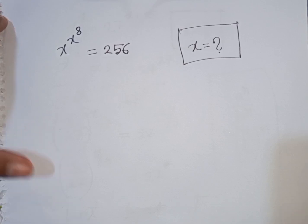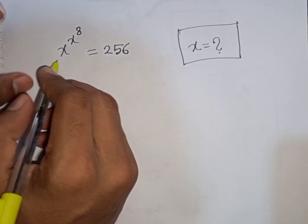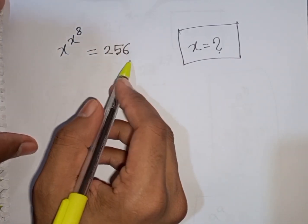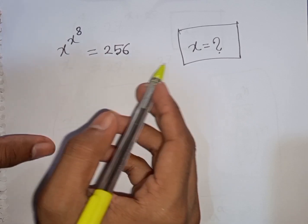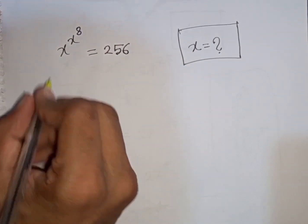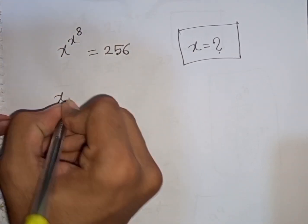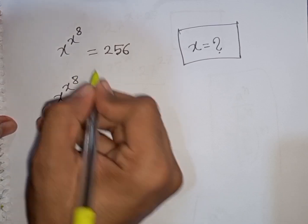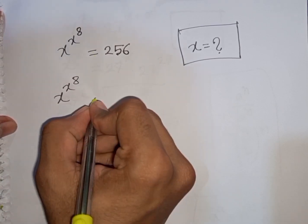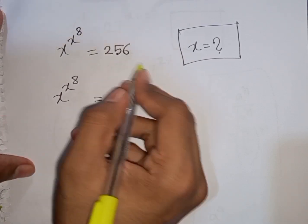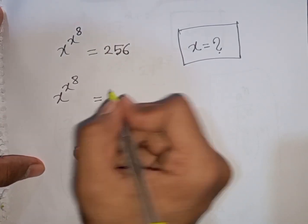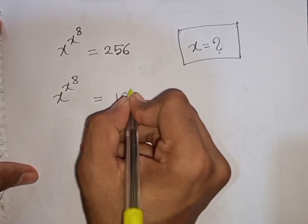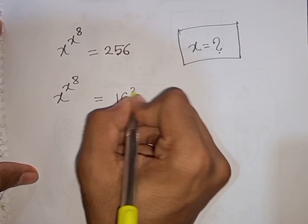How to solve x power x power 8 is equal to 256 — find the value of x. We have x power x power 8 is equal to 256, which can be written as 16 squared.